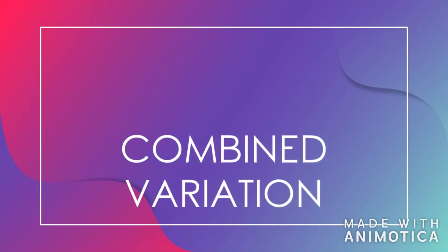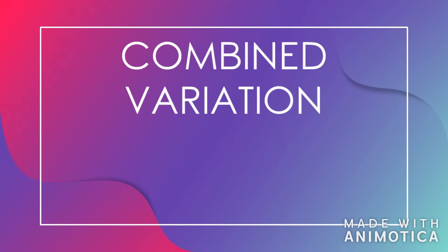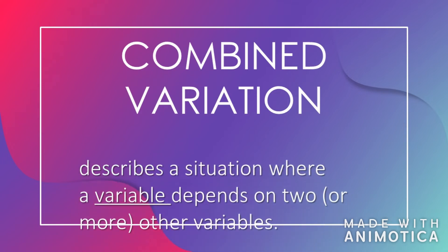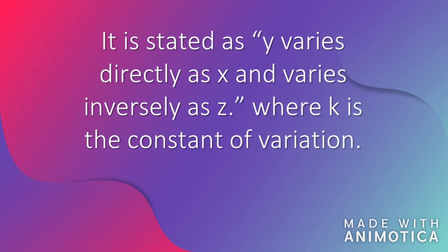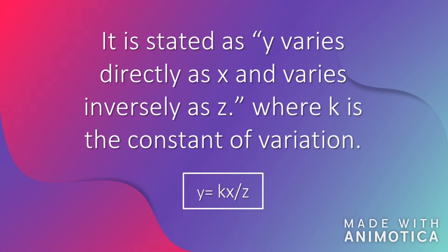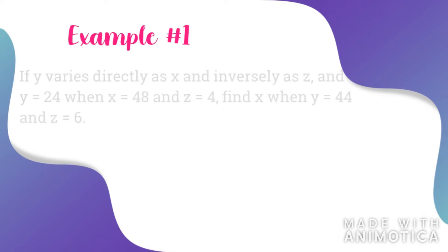What is combined variation? Combined variation describes a situation where a variable depends on two or more other variables. It is stated as y varies directly as x and varies inversely as z, where k is the constant of variation. In mathematical equation, it is stated as y is equal to kx over z. We will give you some examples for further explanation.